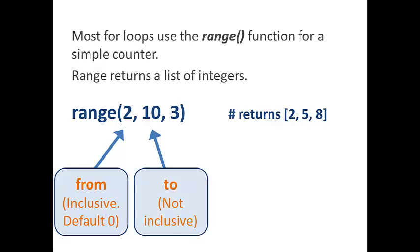The second field is required. It's the to value. And it's not inclusive. So the list only will count up to n minus one. So in this case, nine.